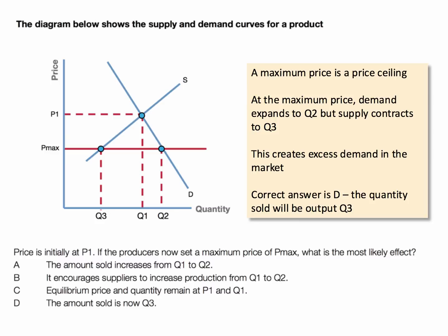C is wrong — equilibrium price and quantity do not remain at P1 and Q1, because the maximum price has been set below the equilibrium, so it becomes effective and is going to have an impact. So D is right: the amount sold in the market is now going to be quantity Q3. That's the quantity that will be sold after the maximum price has been established.